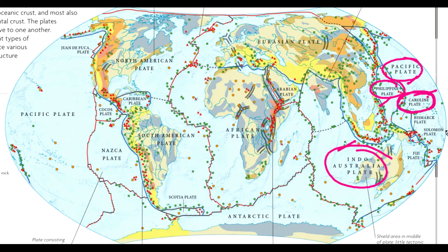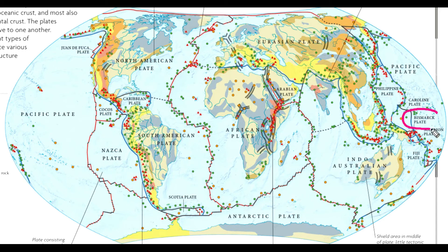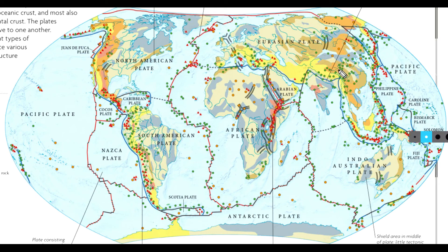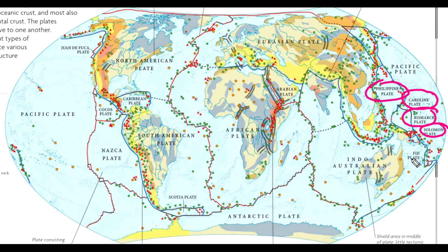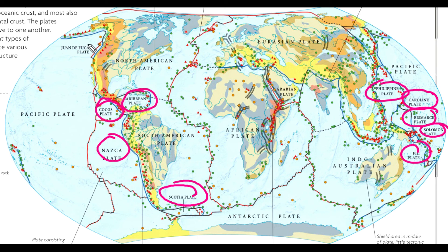The Caroline plate touches the Pacific plate, Philippine plate, and Indo-Australian plate. The Bismarck plate is in the northeast corner of Australia. The Solomon plate is near the Solomon Islands. There is also the Fiji plate. So the minor plates are: Philippine, Caroline, Bismarck, Solomon, Fiji, Scotia, Nazca, Coco's, Caribbean, Juan de Fuca, and Arabian plate.